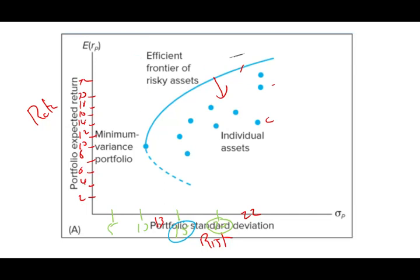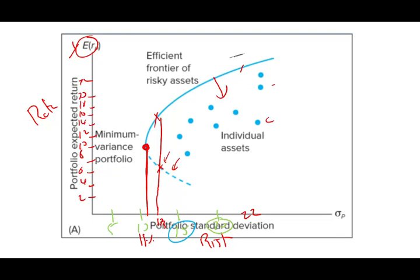Anything outside the line is considered impossible given the risk and return we are assuming. On this efficient frontier line, there is the minimum variance portfolio — the point where the portfolio has the minimum risk of 11%. This is the closest point to the y-axis, the safest investment. Below this point, indicated by the dotted blue lines, you do not want to invest. For example, at 13 standard deviation below the minimum, you'd get only a 7% return, whereas the efficient part gives you 15%.